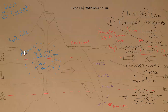Contact metamorphism also occurs where the subducting slab partially melts and magma rises — possibly forming a secondary volcano — and you get contact metamorphism in that setting as well. I'll mark that as Type Two contact metamorphism on the diagram.